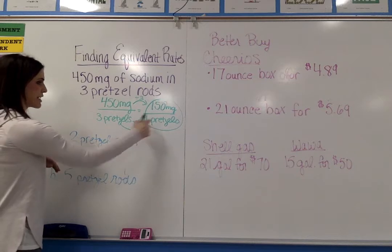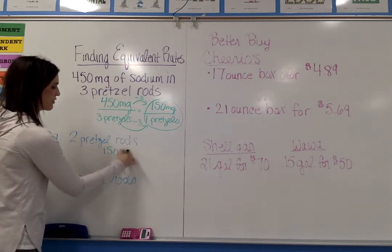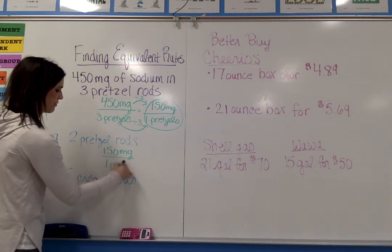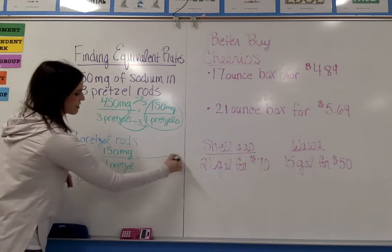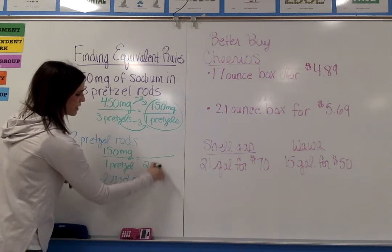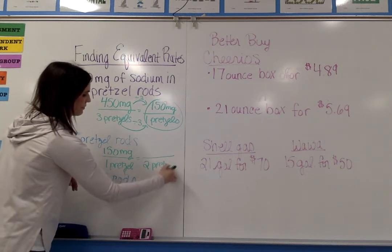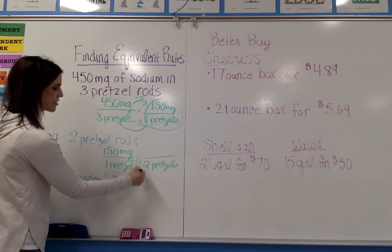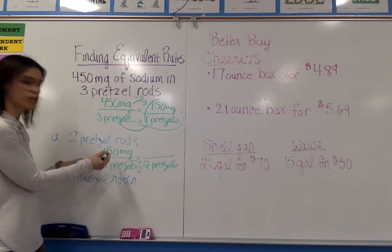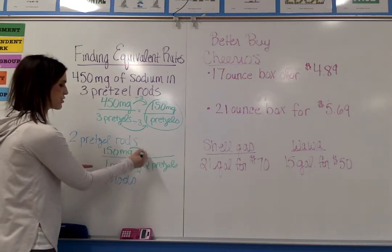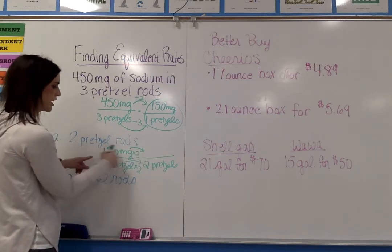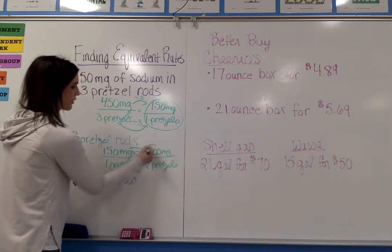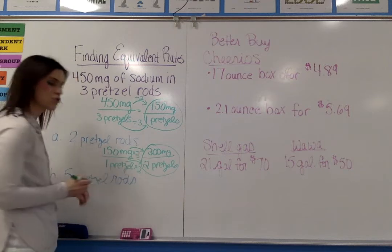Now to find the amount of milligrams in two pretzels, I'm going to take the unit rate — 150 milligrams in one pretzel — and make the equivalent rate for two pretzels. To get from one to two, I'm multiplying by two, so I also have to multiply the numerator by two. 150 times two is 300, so there are 300 milligrams of sodium in two pretzels.